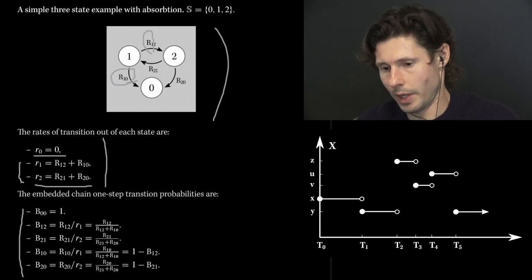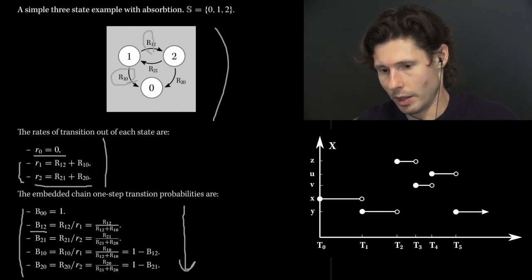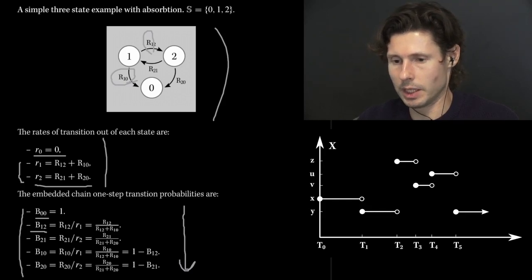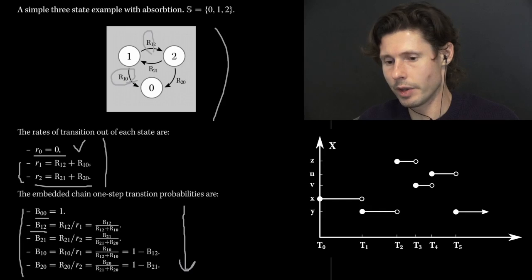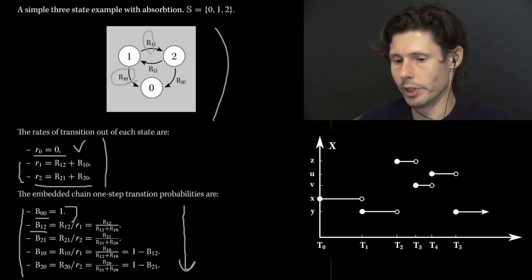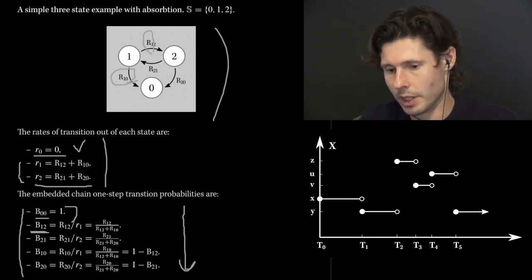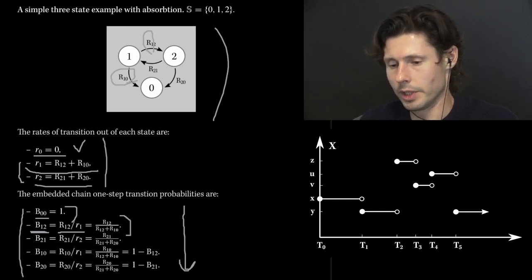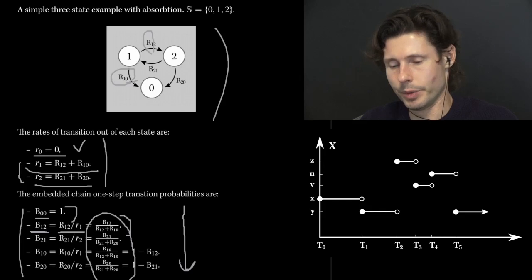You can go down the list and verify each one. For example, why is B00 equal to 1? That can only happen when the rate of that state is 0 — and indeed, the rate of state 0 is 0, so we stay there forever, and the embedded chain always self-transitions with probability 1. The transition probability B12 is just R12 divided by R1. All of these expressions are direct implications of the connection between the generator and the embedded transition probabilities.